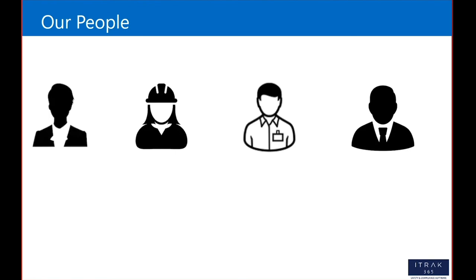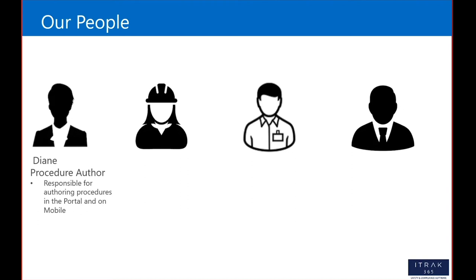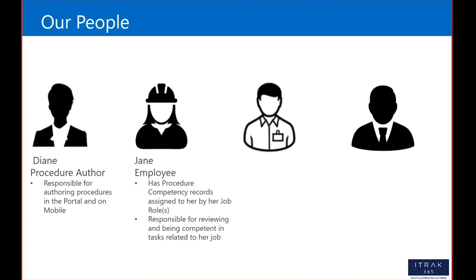As we demonstrate this, we're going to talk about different people in your organization, because I think this is the best way to demonstrate this module. I want to show you how different individuals interact with this module. So we're going to talk about four different people. First, the author — someone responsible for authoring our procedures in the portal and on mobile. That's going to be me. Then we're going to have Jane.